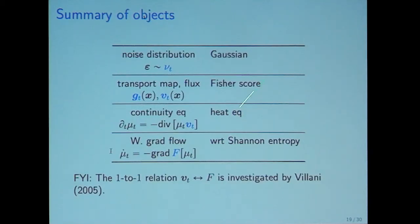This is a summary of objects. We start from noise distribution, mu T, and derive the transport map and flux, V T. Then the corresponding data distribution is according to continuity equation. There's one-to-one correspondence between Wasserstein gradient flow. In this talk, we assume that mu T equals Gaussian. Then the flux is Fisher score. And the continuous equation is heat equation. And then the gradient flow is with respect to Shannon entropy.